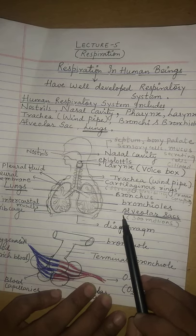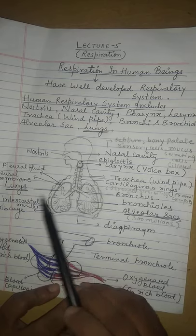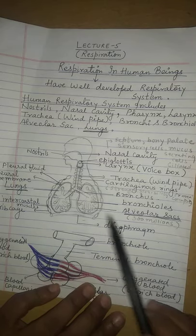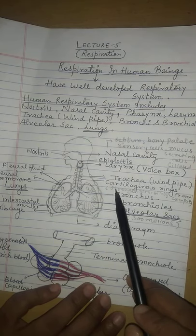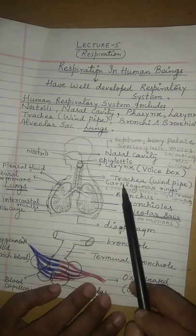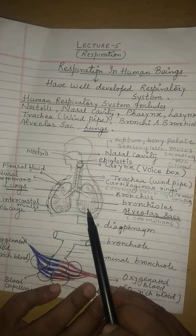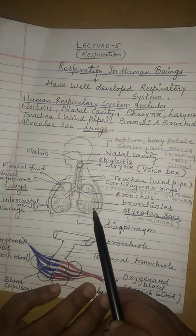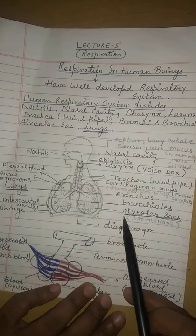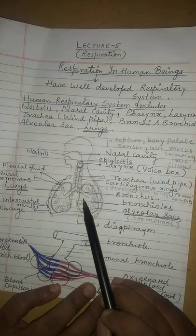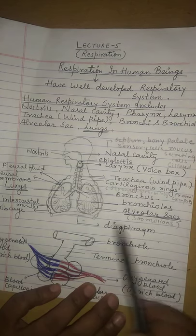Understand the alveolar sacs very clearly, as they are very important from an examination point of view. The two important exam topics are: the function of cartilaginous rings, and the alveolar sacs. Alveolar sacs are rounded structures present inside the lungs. In a single lung, approximately 300 million alveolar sacs are present.